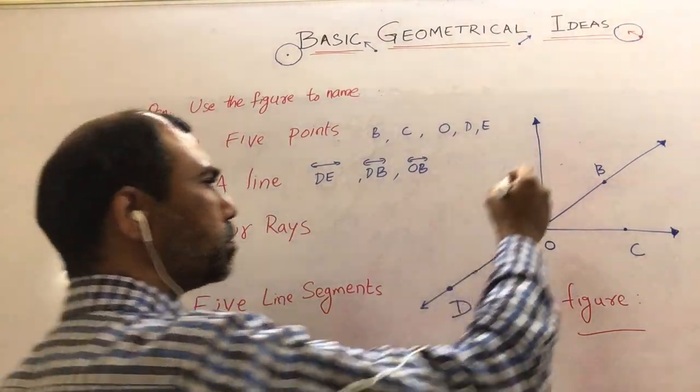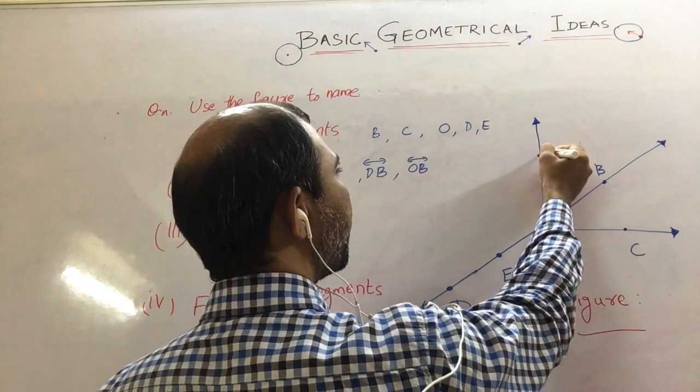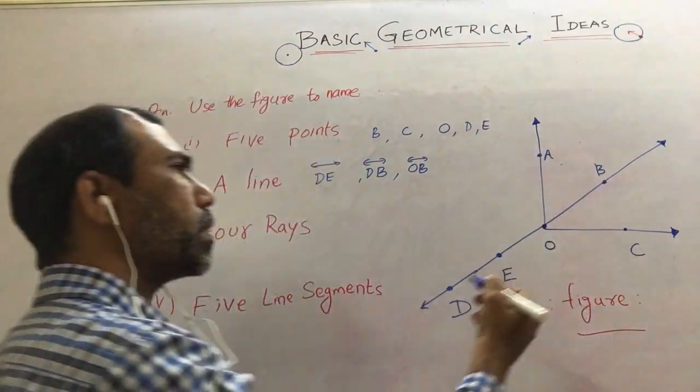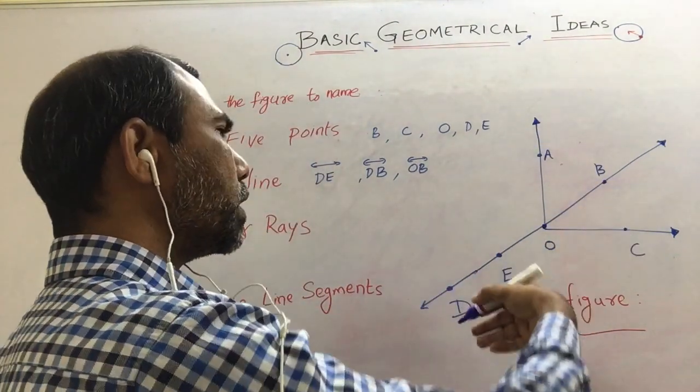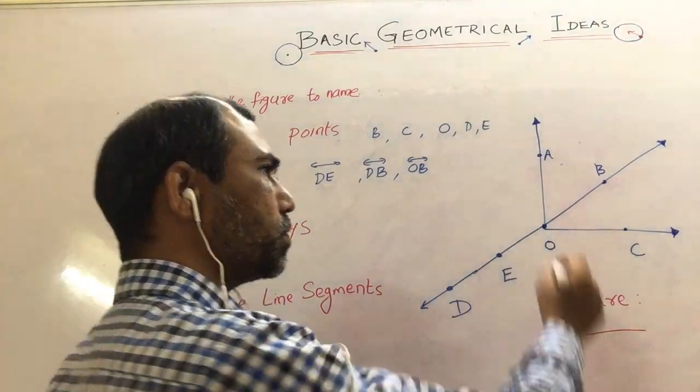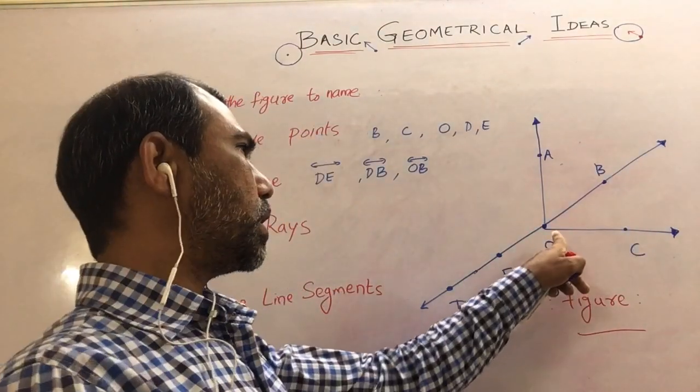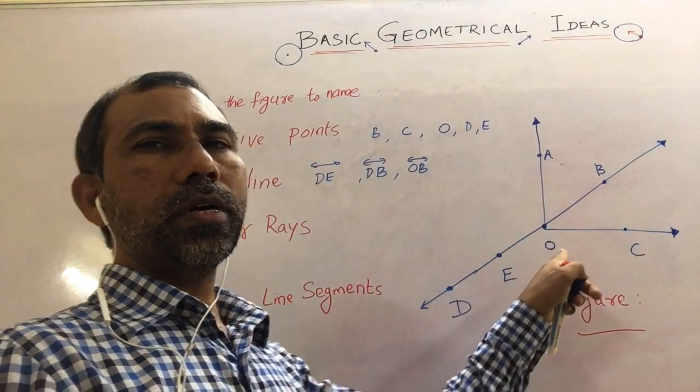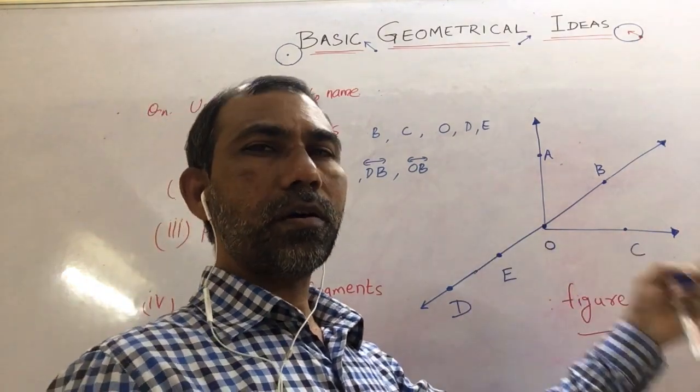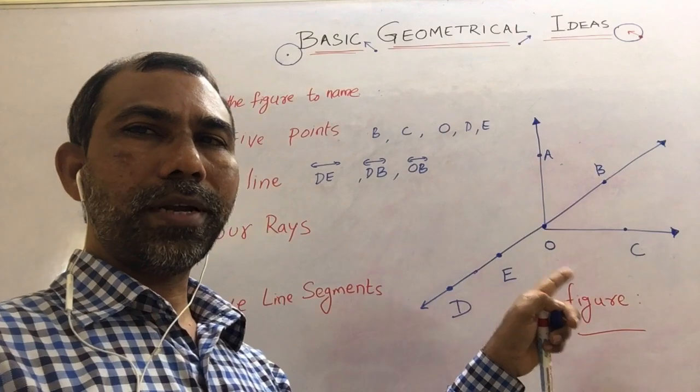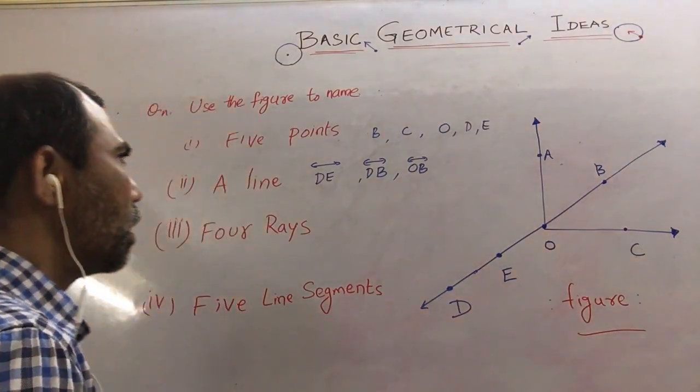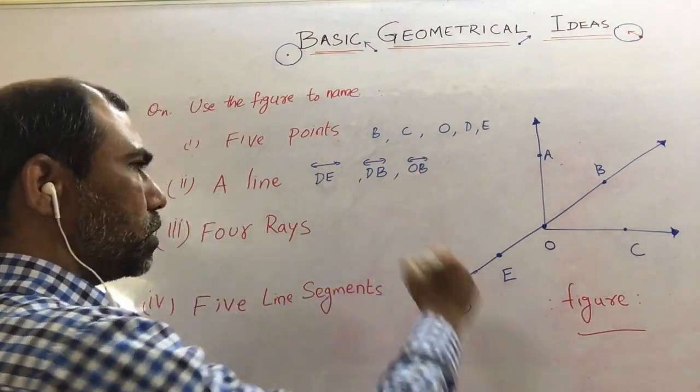Like that you can have a different number of straight lines. We cannot say OC is a straight line because there is an initial point there. So it may be a ray but it cannot be a straight line. You can see the notation of line.